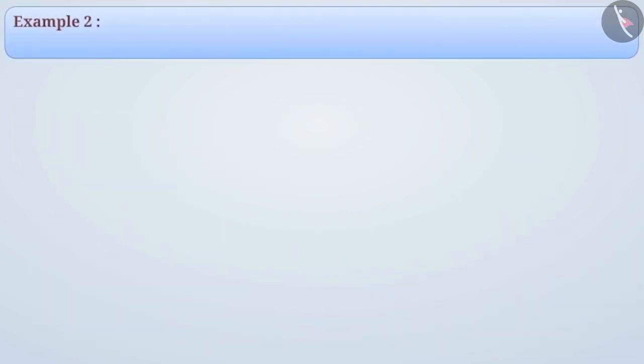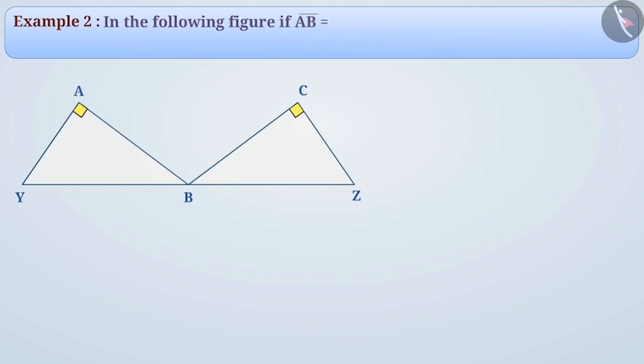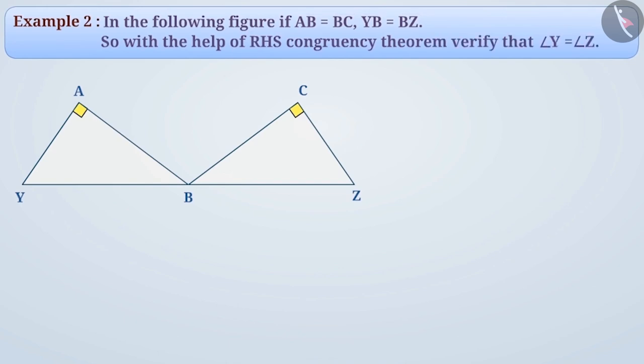Next example. In the following figure, if AB equals BC and YB equals BZ, so with the help of RHS congruency theorem, verify that angle Y equals angle Z. By looking at the given figure and reading the question properly, we get the following information.